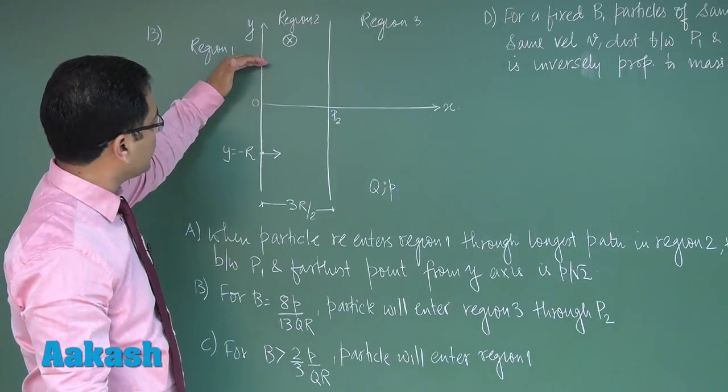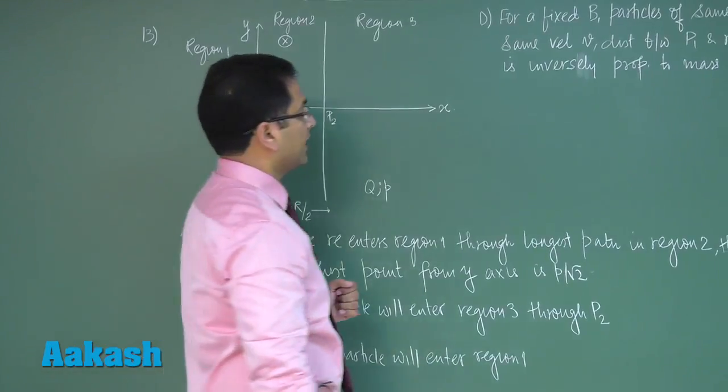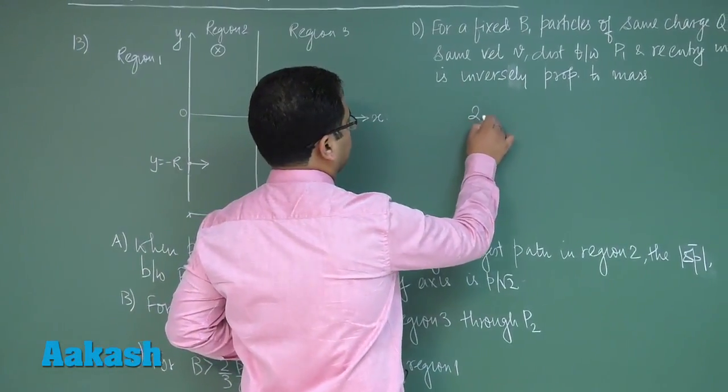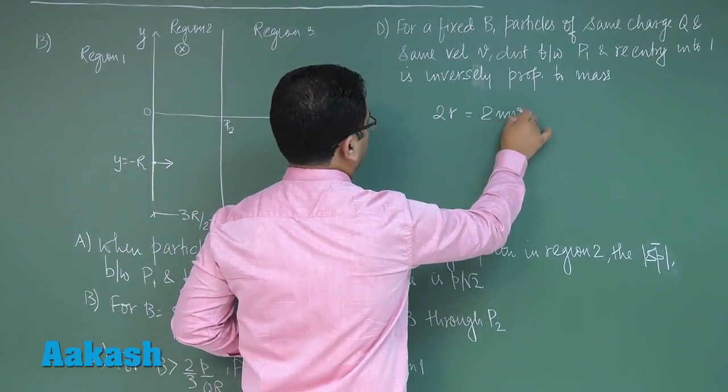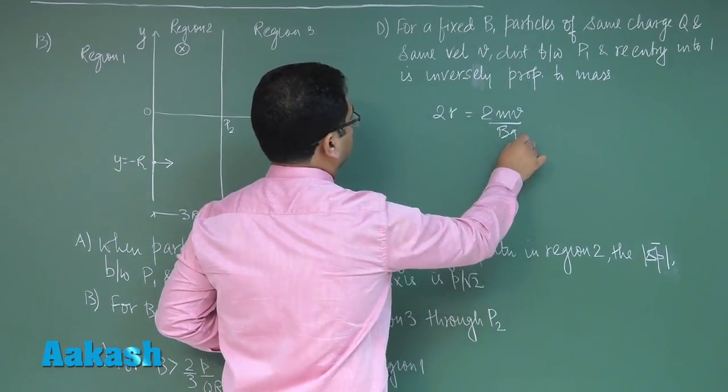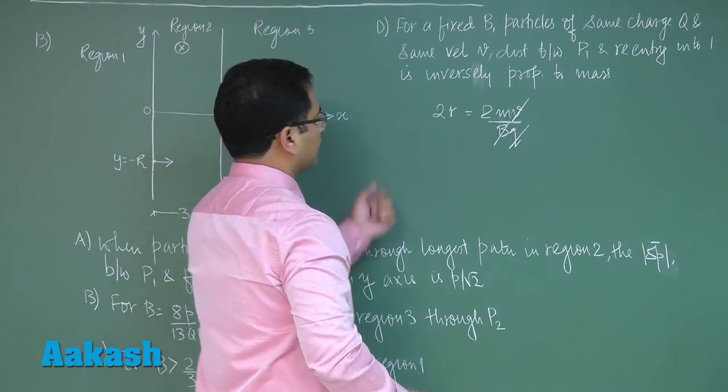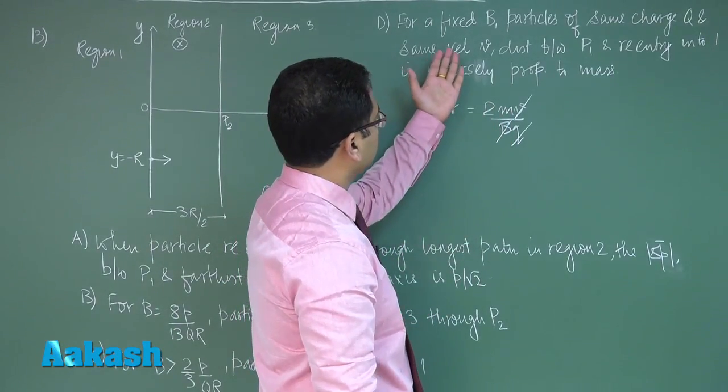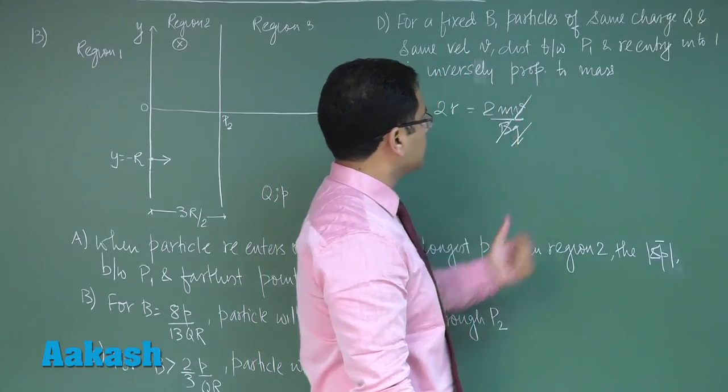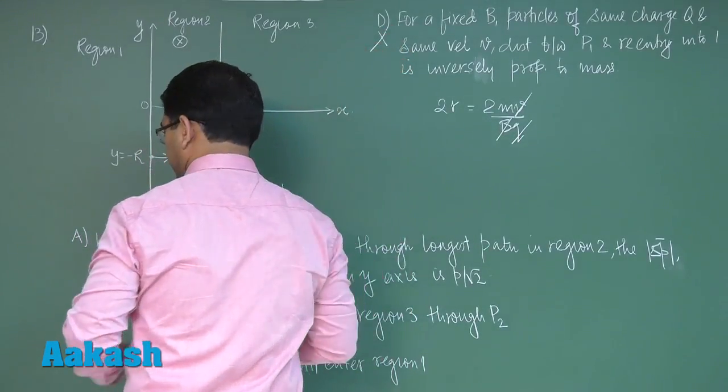The point of entry and re-entry, the distance between them will be twice the radius, which is twice of mv by bq. Now fixed B, charge is also same, velocity is also same, that distance would be directly proportional to m. But the question says it's inversely proportional to m, so option number d would be treated to be incorrect.